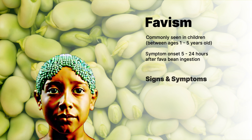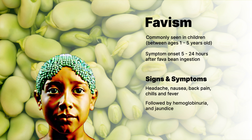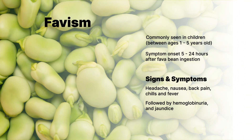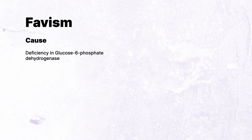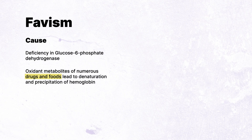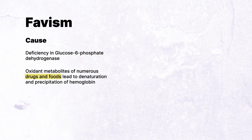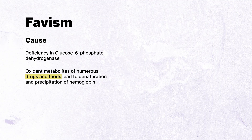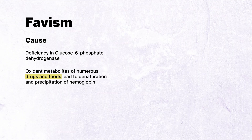Patients will typically complain of headache, nausea, back pain, chills, and fever, followed by hemoglobinuria and jaundice. Individuals who develop favism are almost invariably deficient in glucose-6-phosphate dehydrogenase. In G6PD deficiency, oxidant metabolites of numerous drugs result in denaturation and precipitation of hemoglobin, causing erythrocyte injury and rapid hemolysis.